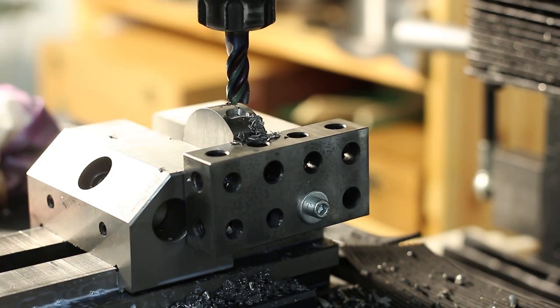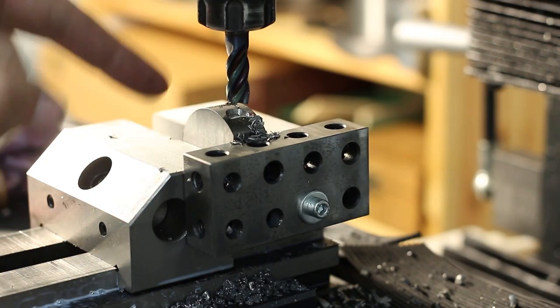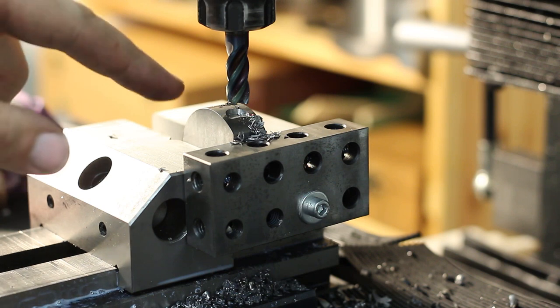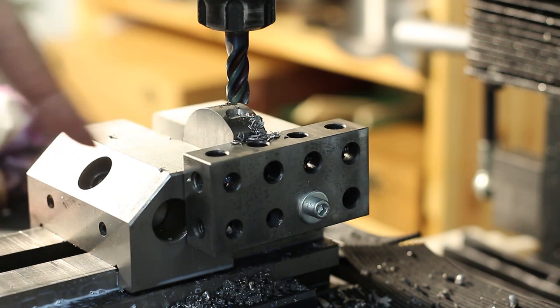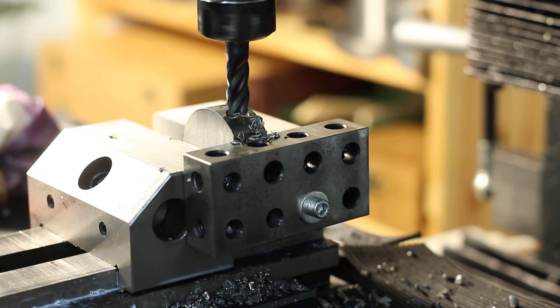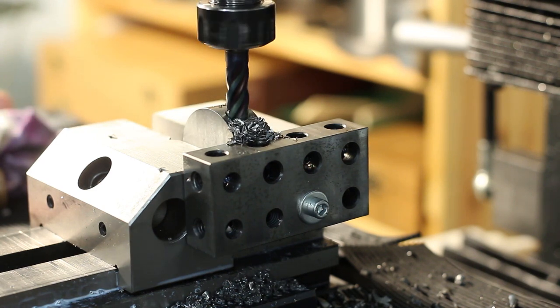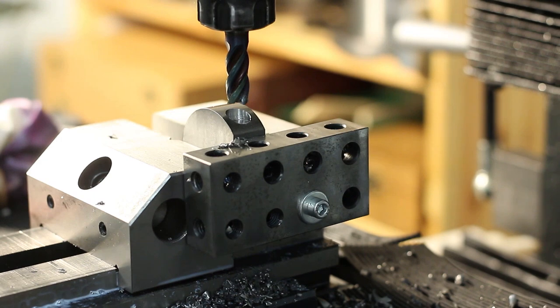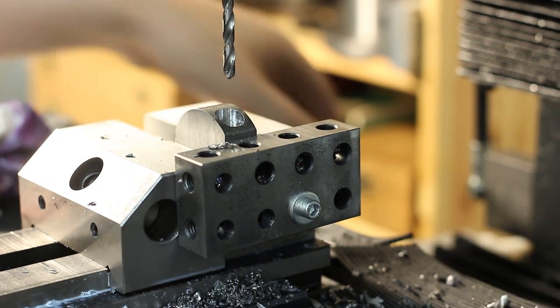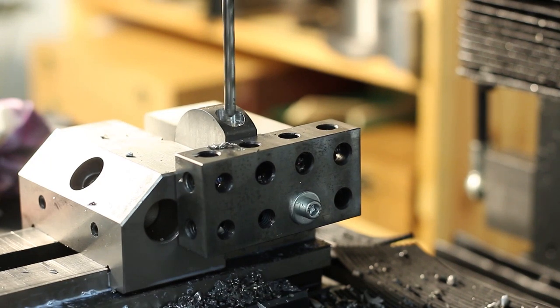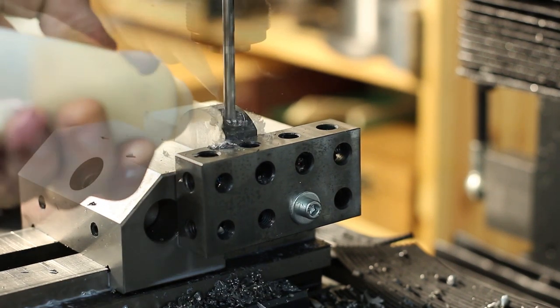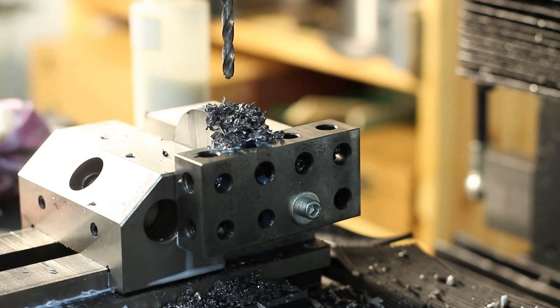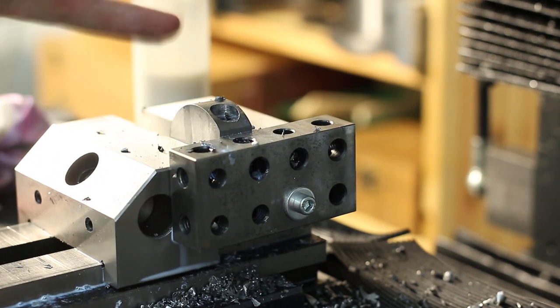Spot facing the part before we drill, otherwise the drill will wander off wherever it wants. Just using an end mill and plunging down until I get a full circle cross section on the spot face. Pre-drilling with a five millimeter drill bit. Opening the hole up with an eleven millimeter drill bit.